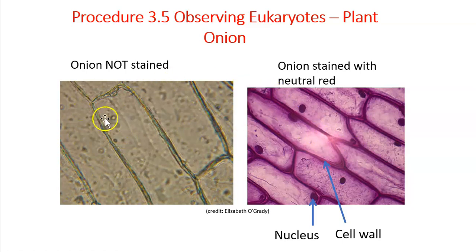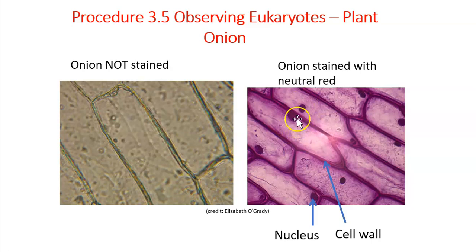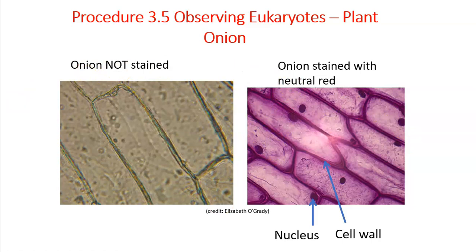When we look at the onion, you're going to be making a slide and staining it with a stain called neutral red. Notice the contrast and the structures that pop out with the stain. The nucleus stains very vividly — remember that in the nucleus we expect to find genetic material, we expect to find DNA. You can also see that rigid cell wall. Note that there aren't chloroplasts, and be able to explain why we don't expect to see chloroplasts in the onion bulb.